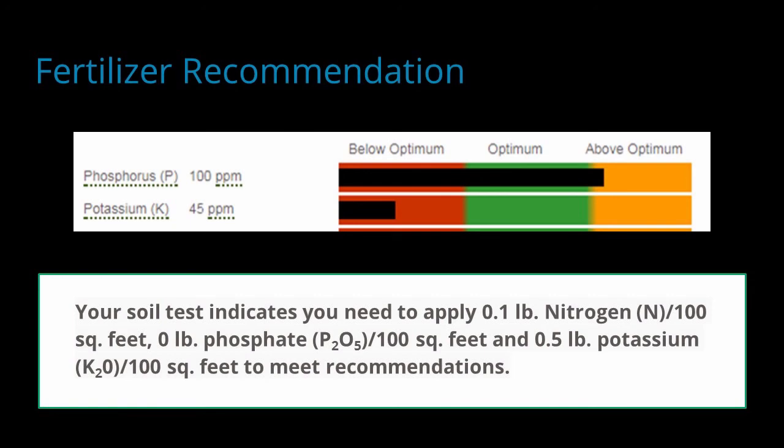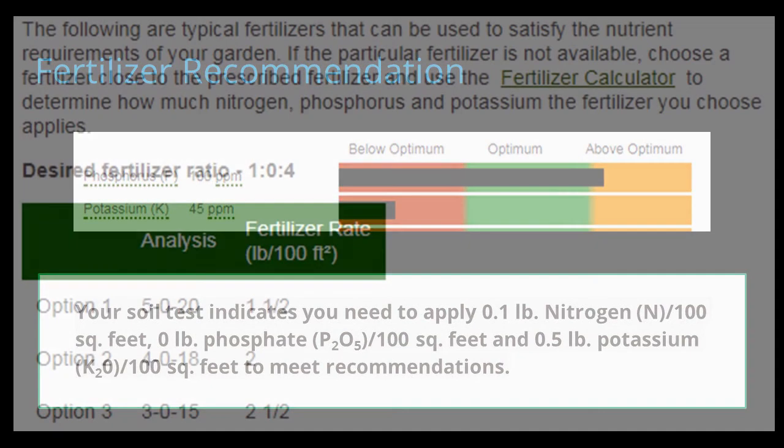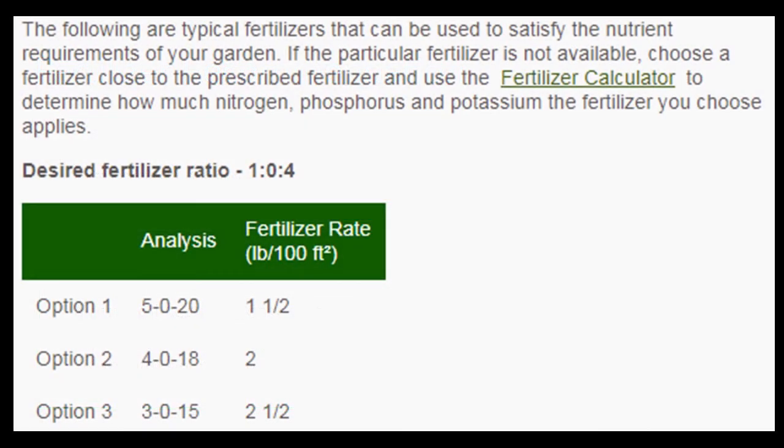Here is the fertilizer recommendation that was provided with the soil test. For every 100 square feet of garden area, we should add 0.1 pound of nitrogen, 0 phosphorus because there is plenty, and 0.5 or half pound of potassium. The report goes on to provide a few options for purchasing a fertilizer. Under option 1, if we could find a pre-packaged fertilizer with a 5-0-20 on the package for NPK, we could apply 1.5 pounds of that fertilizer to every 100 square feet of the garden.